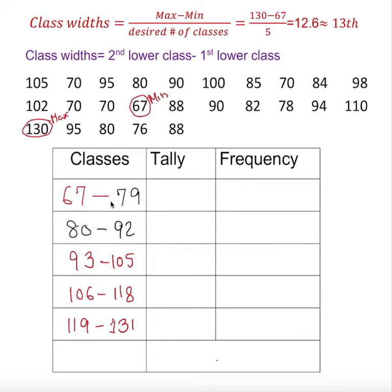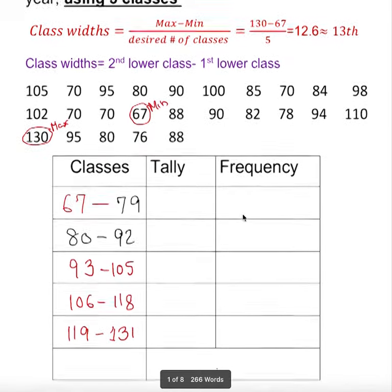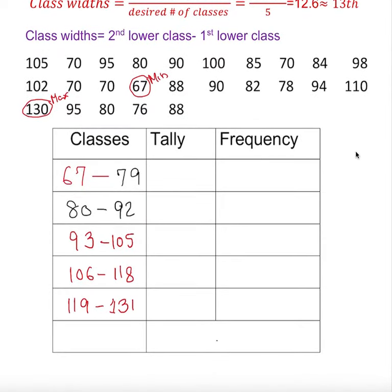This is how we create a grouped class. Now we need a frequency. What I'm going to do is tally. If I do tally, that's the best thing—you just cross one at a time. 105 should be in the third row, and 70 in the first one.